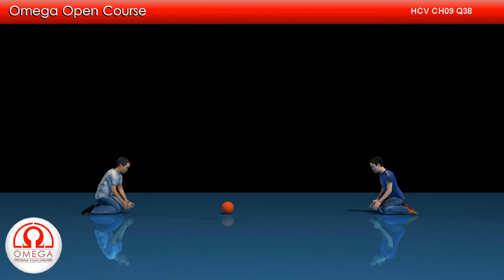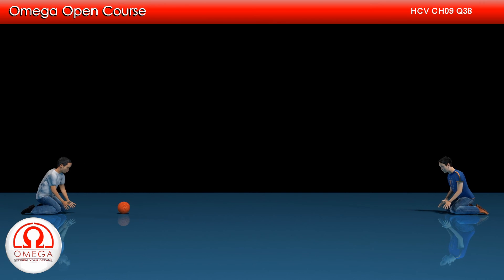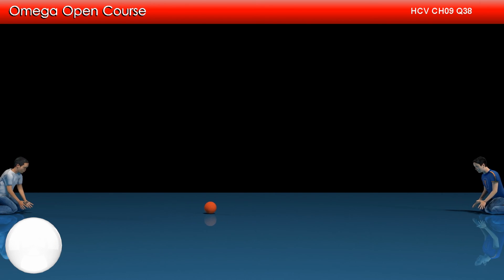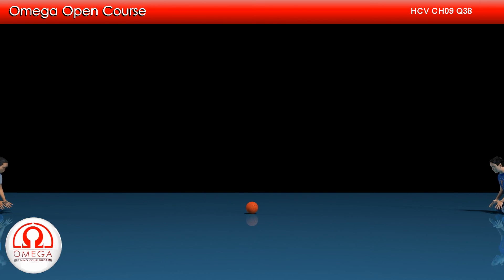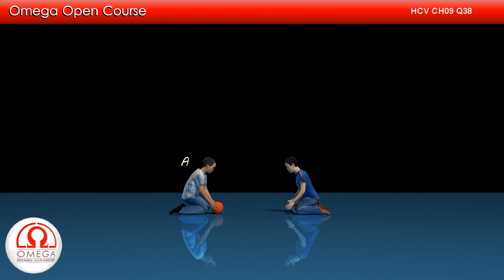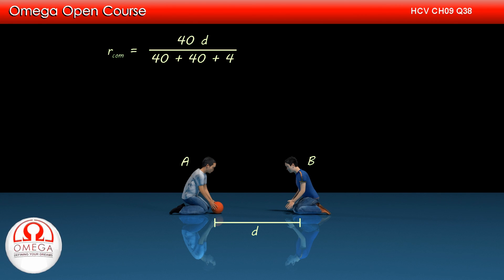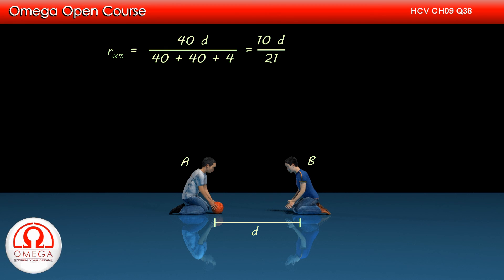Since there is no horizontal force acting on the A plus B plus ball system, the center of mass of the system will remain at its position. So the position of the center of mass after the nth trip will remain at the position where it was at the beginning. At the beginning, the ball was with A and B was at distance D from A. So the position of center of mass is 40 into D divided by 40 plus 40 plus 4, or 10D by 21. This is the answer to part E of the question.